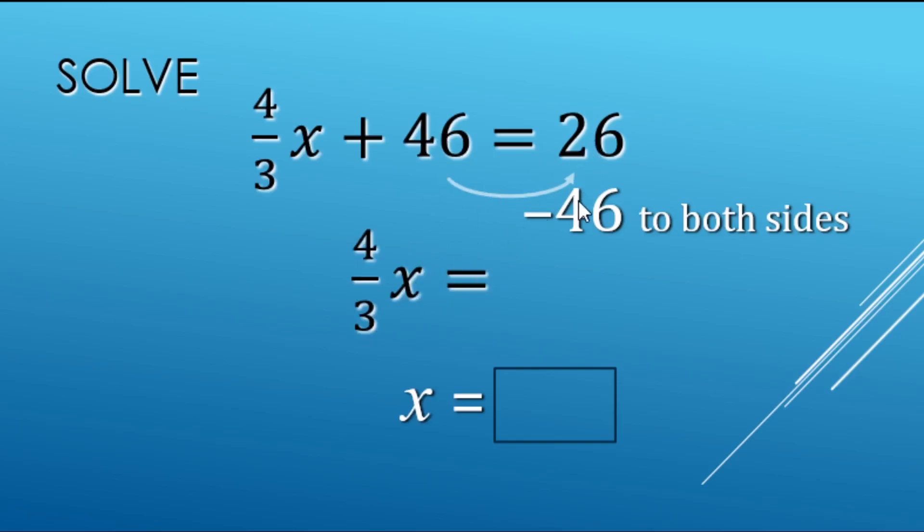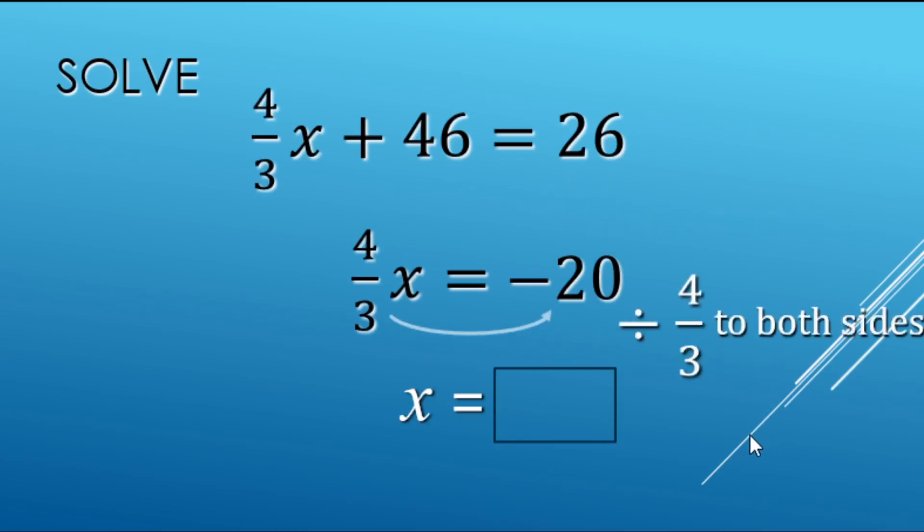Equals 26 minus 46 makes negative 20. So now we undo the 4/3 being multiplied to the x with a divide 4/3 to both sides.